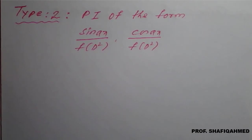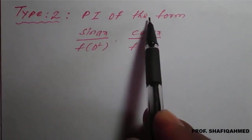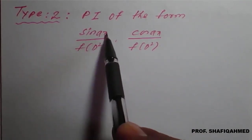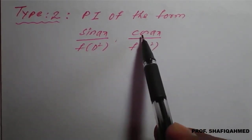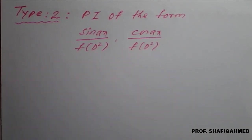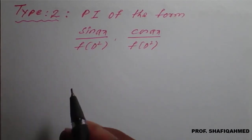Hello students. In today's lecture we will see Type 2 of particular integral under differential equations. Here, Type 2 is of the form where you may get phi of x as sin(ax) upon f(D²) or cos(ax) upon f(D²). If such cases are there, we need to know how to get the particular integral — that is very important.